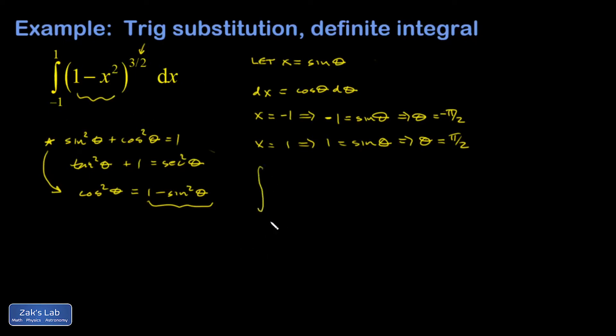Let's rewrite the integral. Inside those parentheses is now 1 minus sine squared, and dx is cosine theta d theta.